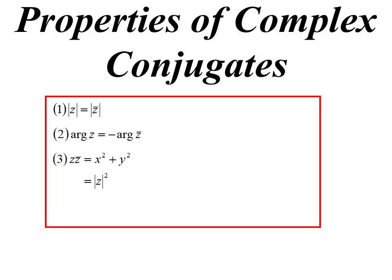Z times Z conjugate. We were saying before that's the sum of two squares, which it is. But now we know about modulus, it's a lot easier just to say Z times Z conjugate, that's the modulus squared.